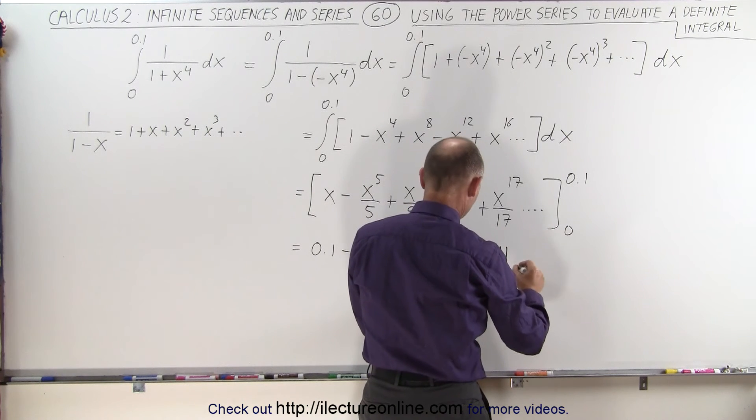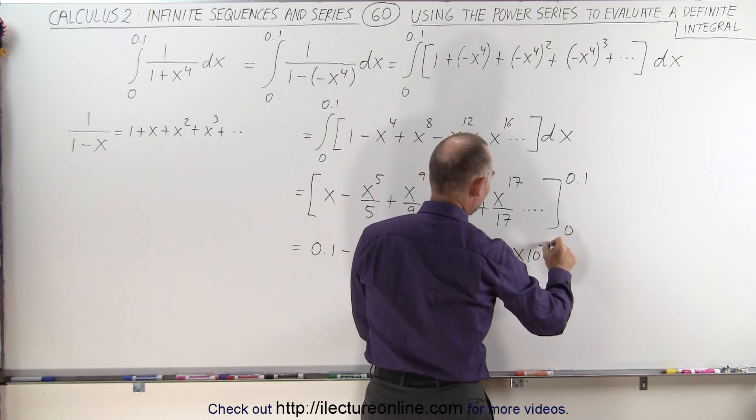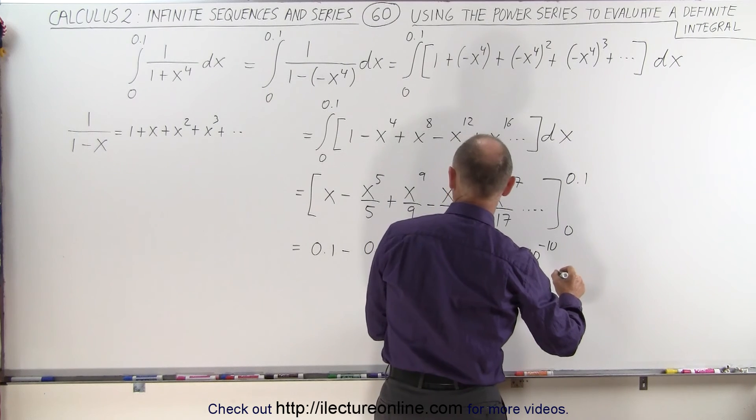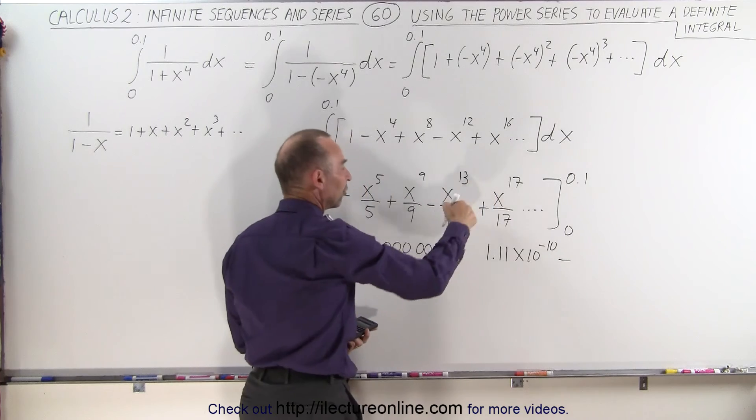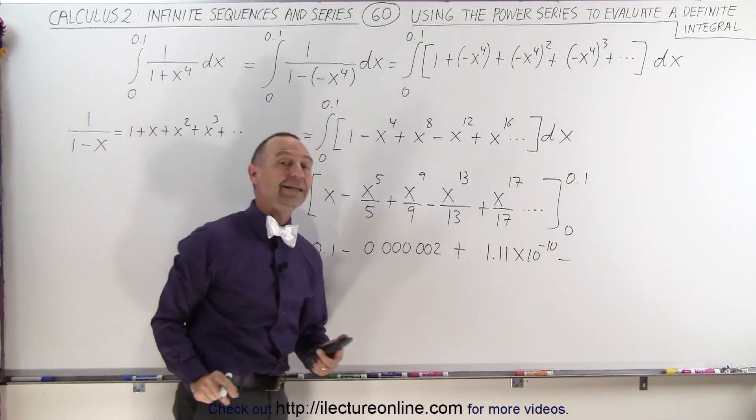1.11 to two decimal places, times 10 to the minus 10, and that would be then minus, then we plug in the next number. You can see when we plug in 0.1 into this term, we get a really, really tiny number.